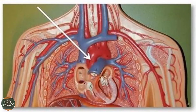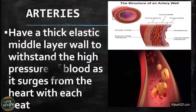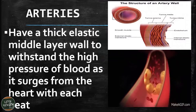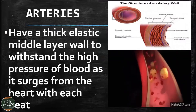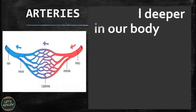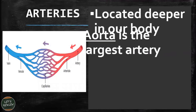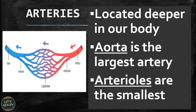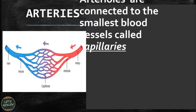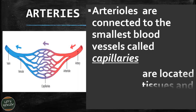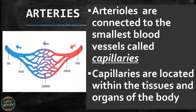Arteries have a thick elastic middle layer wall to withstand the high pressure of blood as it surges from the heart with each beat. They are located deeper in our body. The aorta is considered the largest artery, while arterioles are the smallest. Arterioles are connected to the smallest blood vessels called capillaries, which are located within the tissues and organs of the body.